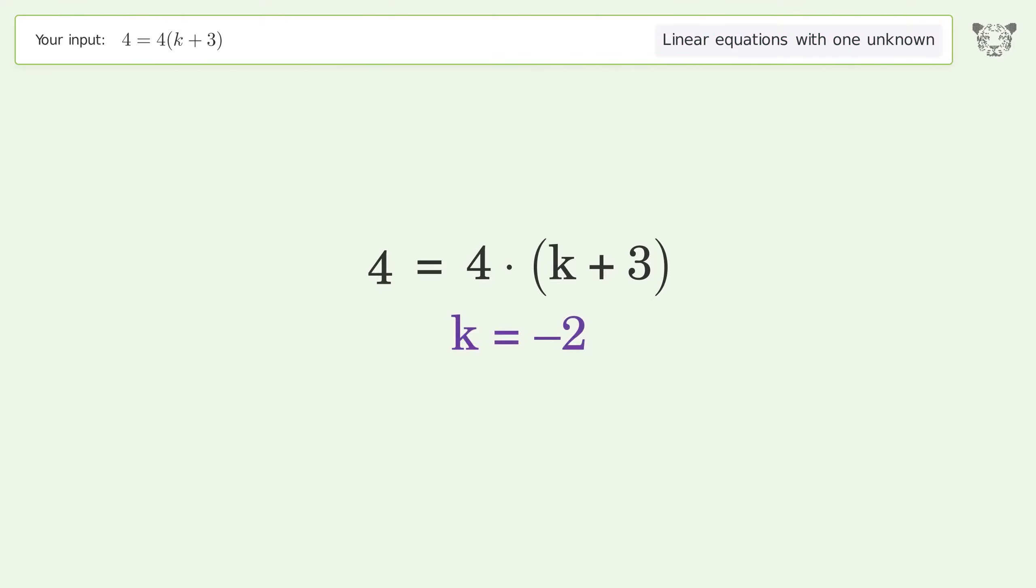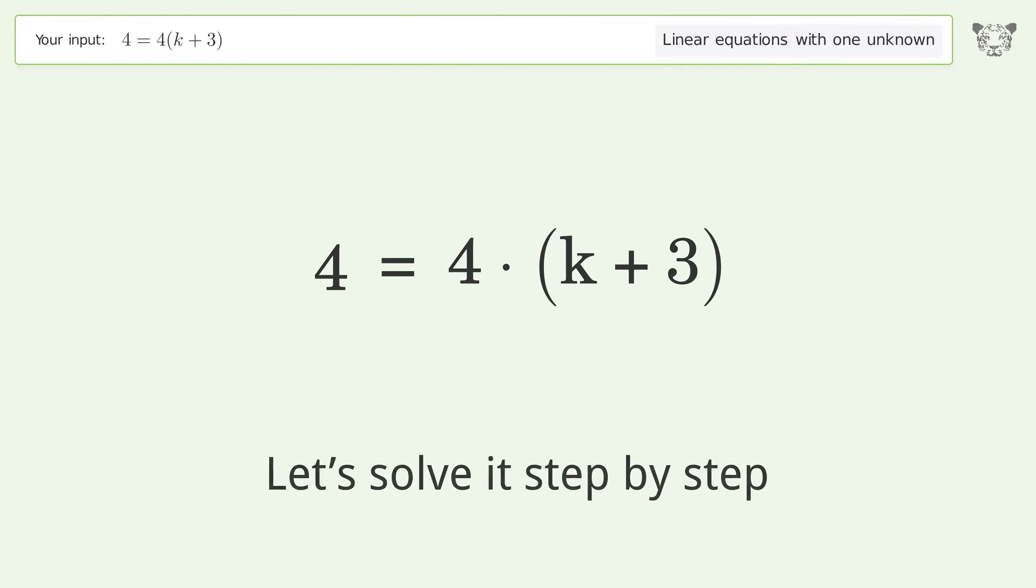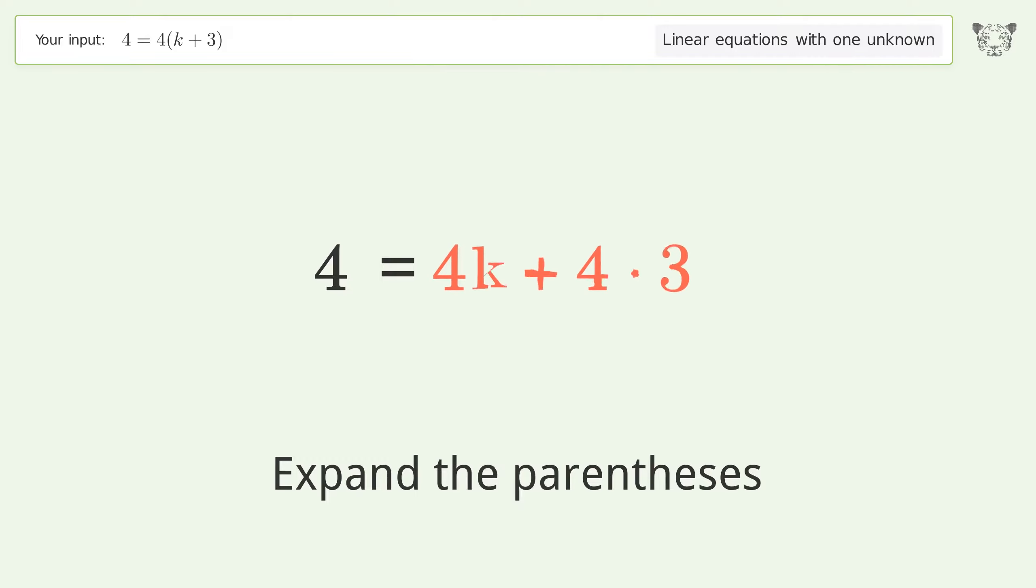This deals with linear equations with one unknown. The final result is k equals negative 2. Let's solve it step by step. Step 1: Simplify the expression.